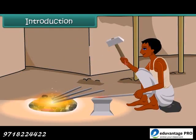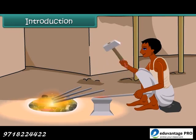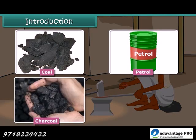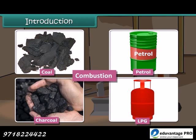The blacksmith burns coal to get hot iron which can be beaten to desired shape. A variety of fuels is used in daily life such as coal, petrol, charcoal, LPG, etc. Do you know which chemical process is taking place during the burning of these fuels? It is combustion. In this lesson you will learn about combustion of fuels.